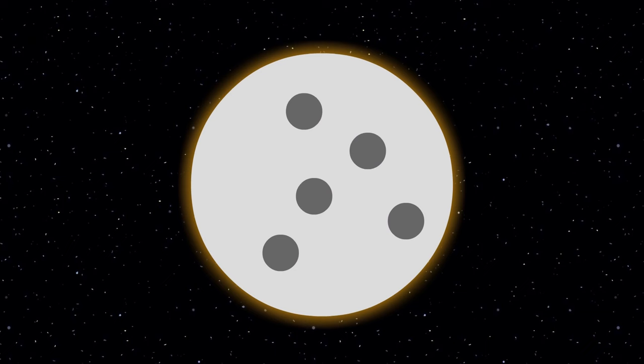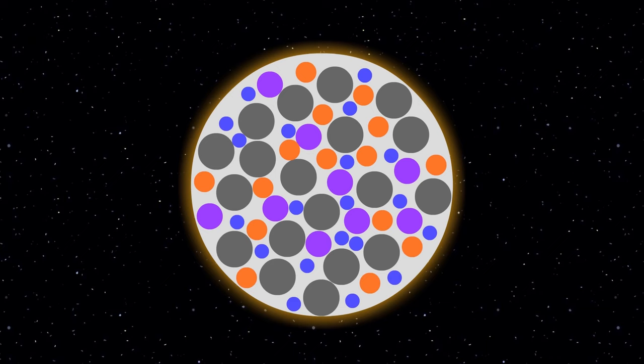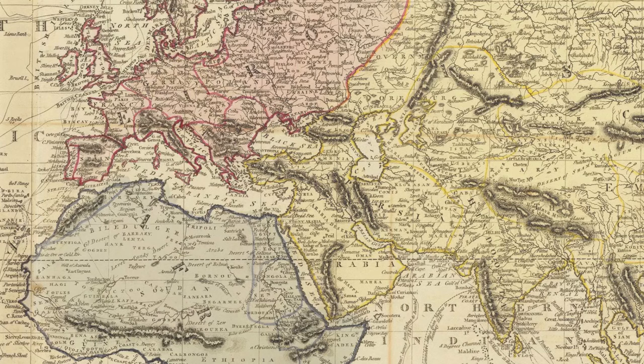Iron refuses to fuse any further, so the star is now jam-packed with heavy elements. With no more fuel to burn, the star begins to cool, and with no heat to combat the compression, it begins to contract.